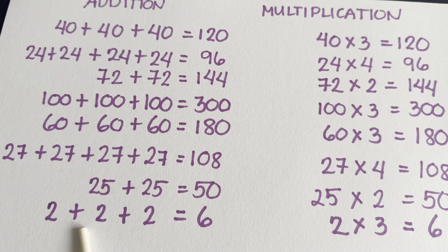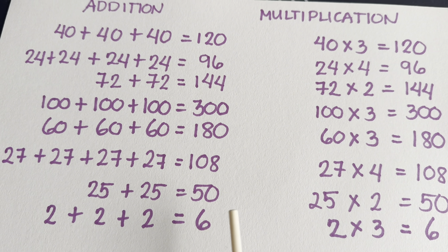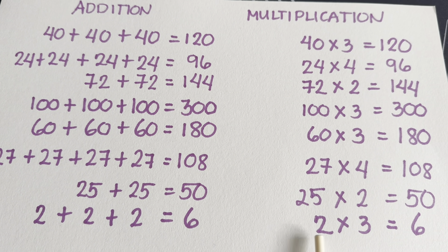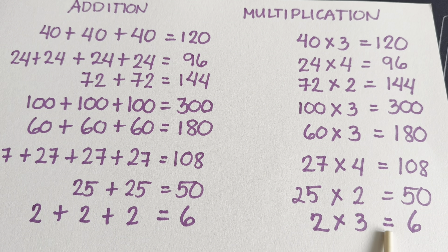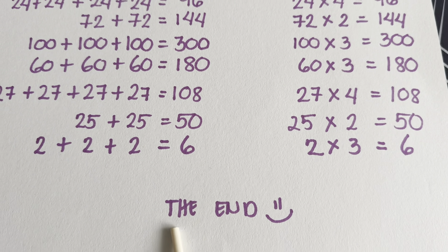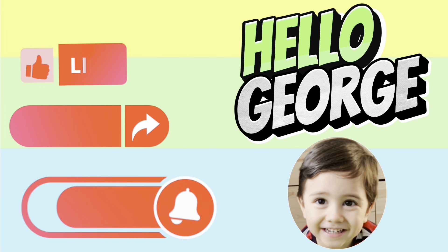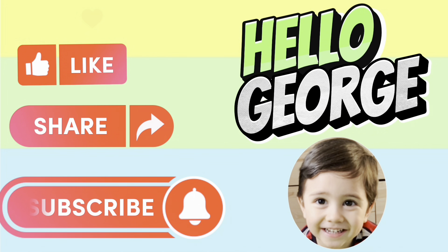Lastly, let's add 2 plus 2 plus 2 is equals to 6. And in Multiplication, let's multiply 2 by 3 is equals to 6. The End. Thank you for watching. Please don't forget to like, share and subscribe to Hello George. Thank you everyone.